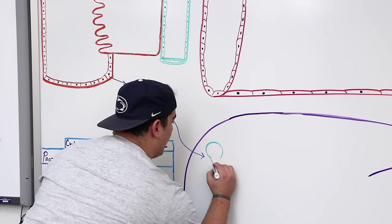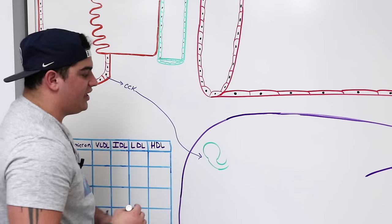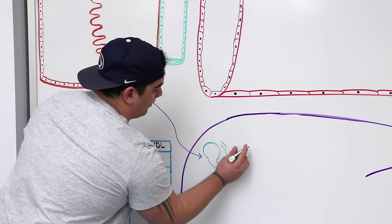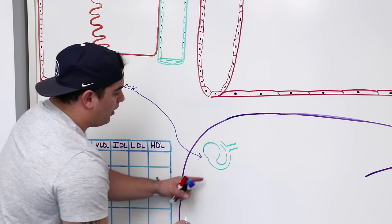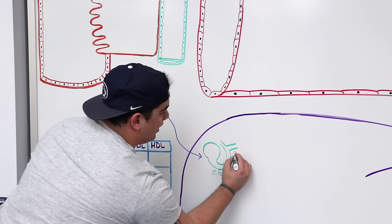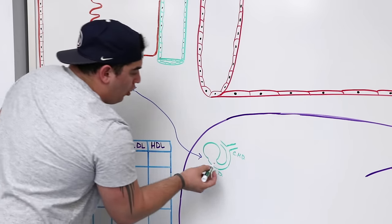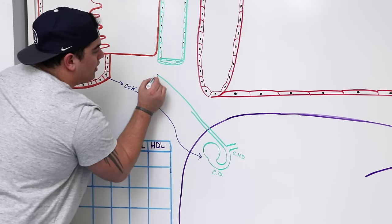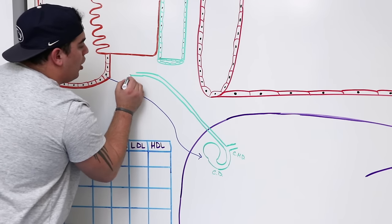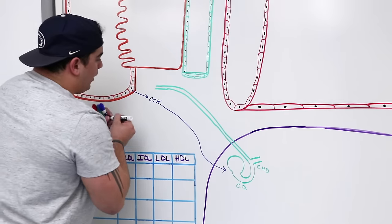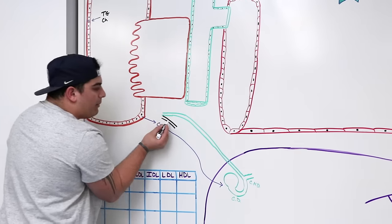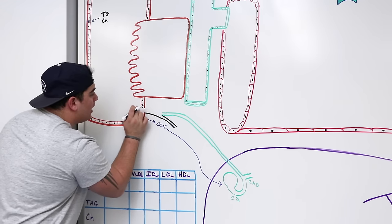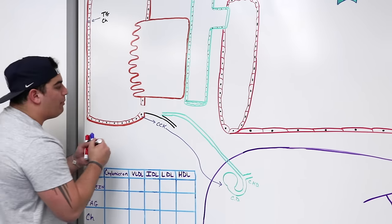Around the liver there is a specialized structure called the gallbladder. From the gallbladder there is the cystic duct, which combines with the common hepatic duct from the liver to form the common bile duct. The common bile duct comes down to the intestines where the pancreas is. The main pancreatic duct and the common bile duct fuse and open into the small intestine around what is called the hepatopancreatic ampulla.